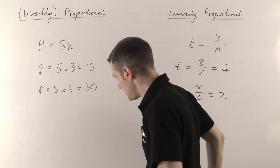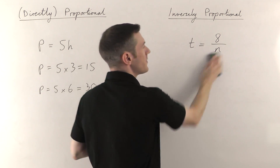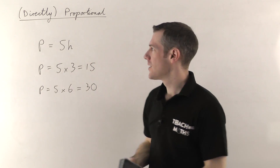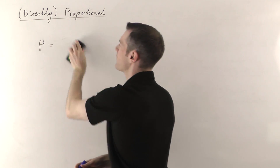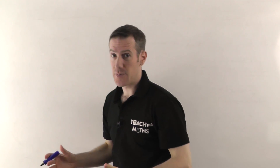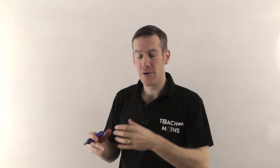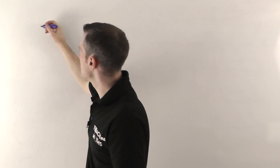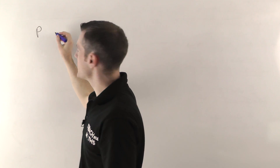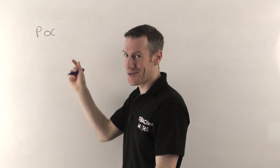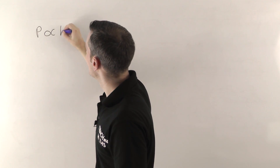Now there are a couple of symbols we sometimes use when describing proportionality. Let me give you an example of the two different kinds of proportional questions they're likely to give you. The amount you get paid, P, is proportional — and the symbol for proportional looks a bit like a fish. It kind of looks like this, but the fish must always swim to the left. So that means P is proportional to the number of hours you work, h.